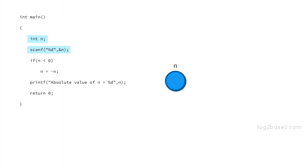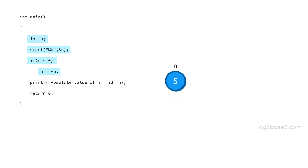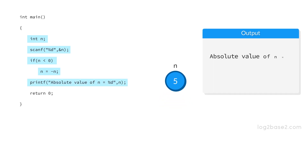Now suppose the user entered the number minus 5 and it will be stored in n. Check if n is less than 0 — and it is. So set n equal to minus n, so now n equals 5. It prints the message: absolute value of n is 5, and finally the program returns 0.